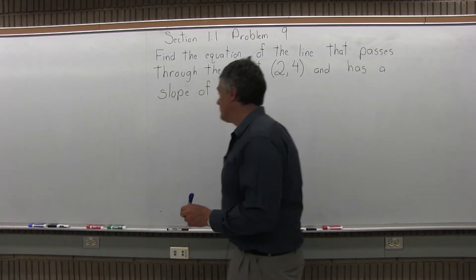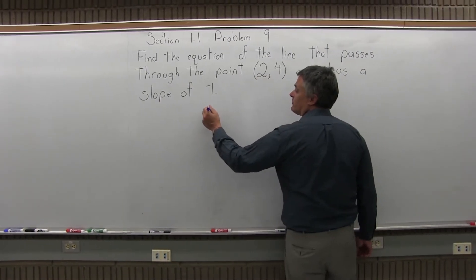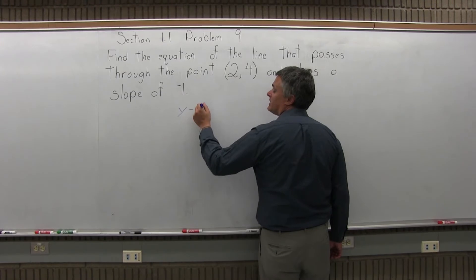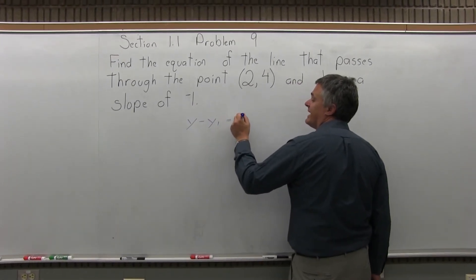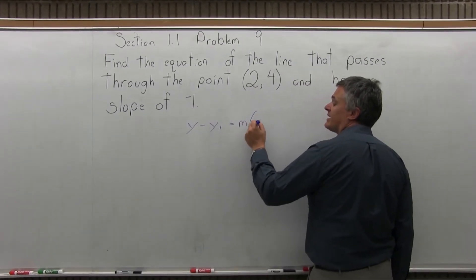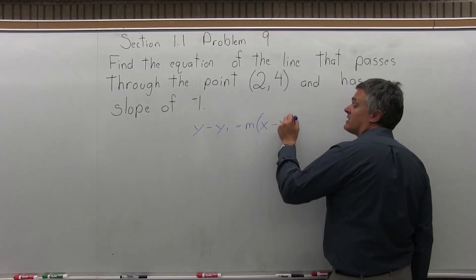So to find the equation of a line, we want to use the formula y minus y1 equals m times x minus x1.